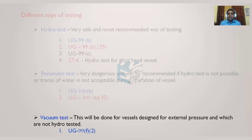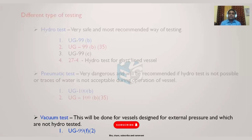The main types of pressure tests are hydro test, pneumatic test, and vacuum test. In some cases, a helium leak test is also performed — this is not a pressurized test but checks for leak tightness. Helium has a much smaller particle size than water (H₂O molecules), so it can detect very fine leaks. It is performed at very low pressure, such as 0.5 to 1 bar.